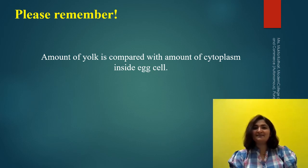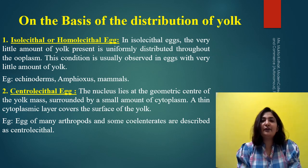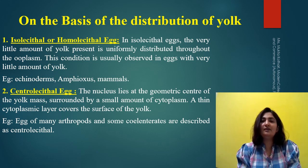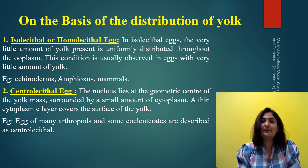The second classification of egg cell depends on the distribution of yolk. According to the distribution of yolk, there are mainly three types: isolecithal or homolecithal, second is centrolecithal, and the third one is telolecithal.